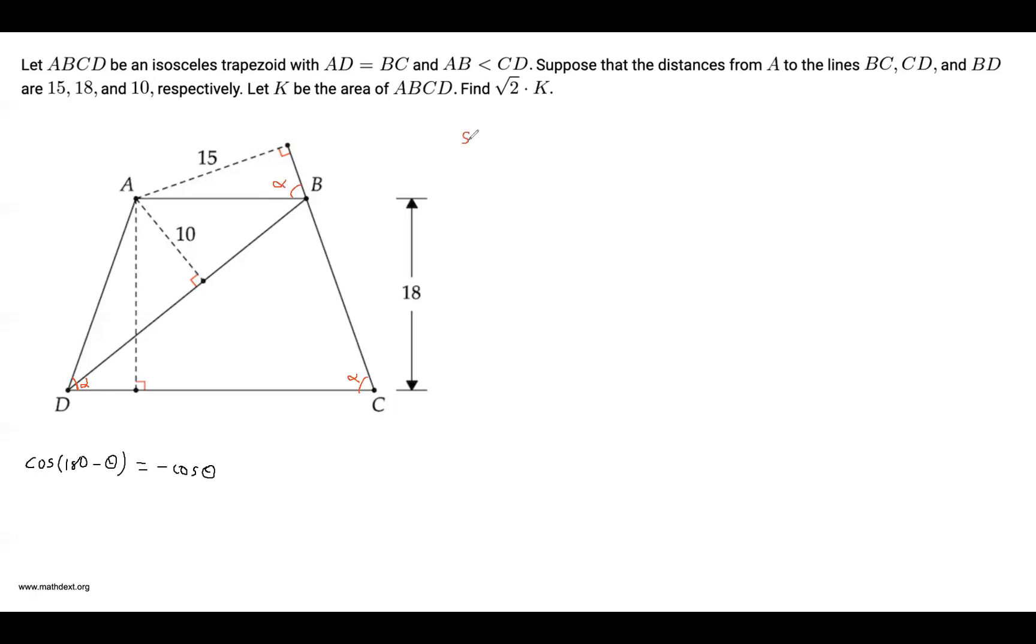And then sine of alpha is going to be opposite over hypotenuse. So in this triangle, we get that sine of alpha is 15 over AB. From this triangle, we get that sine of alpha is this height, which is 18 over AD. So 15 over AB is 18 over AD.